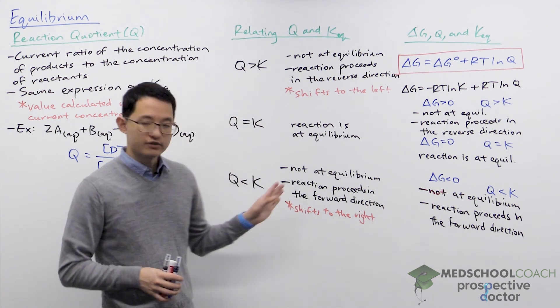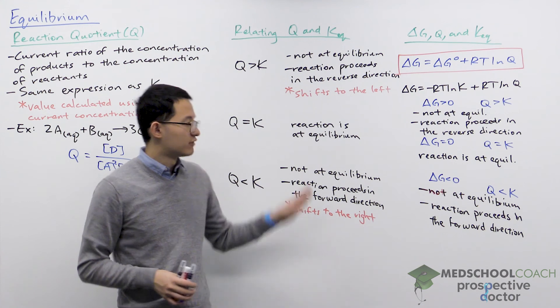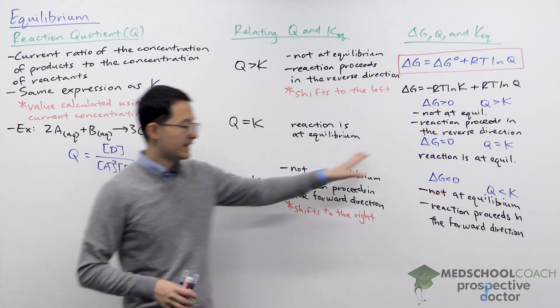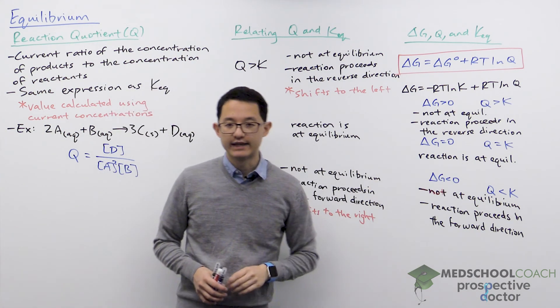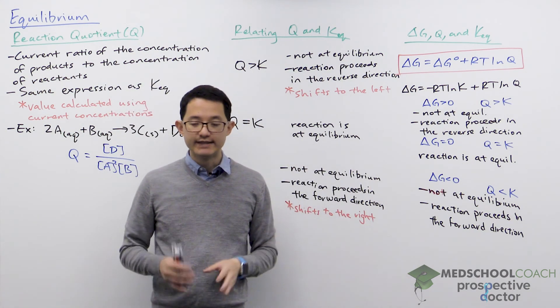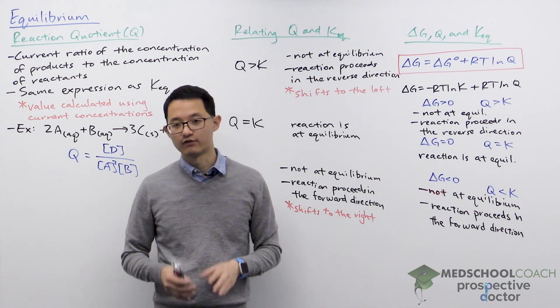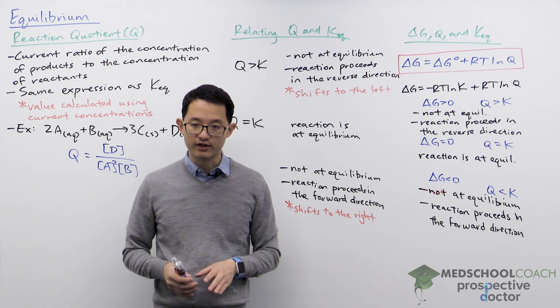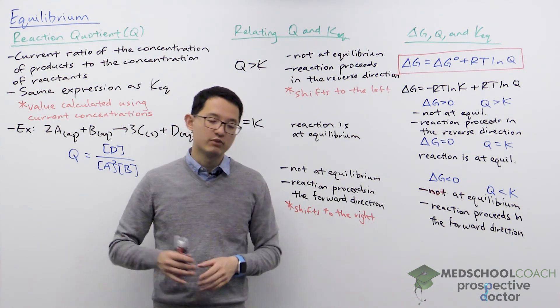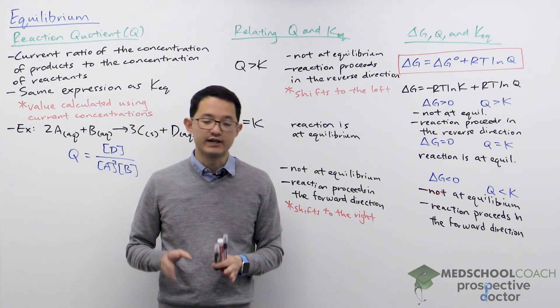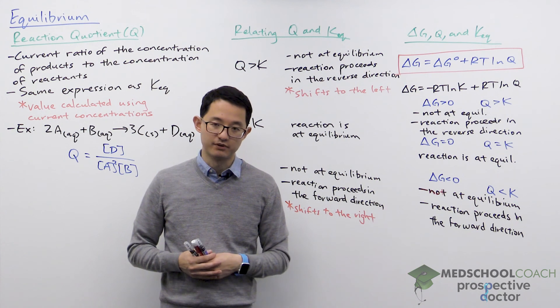Make sure you understand how Q is related to K and how this connects to delta G. This will be important for many MCAT questions, as well as our next topic, which is Le Chatelier's principle.